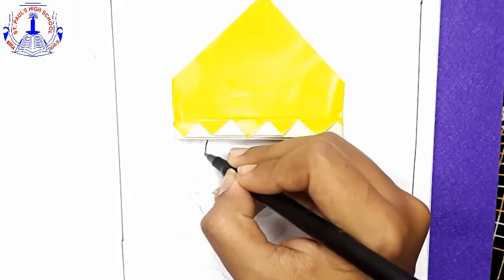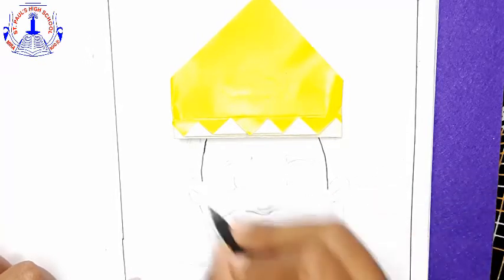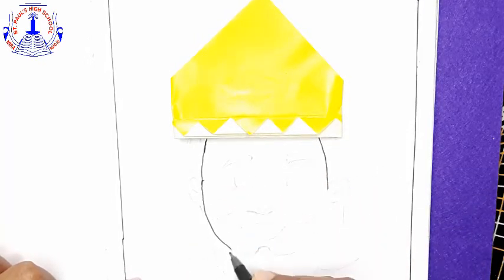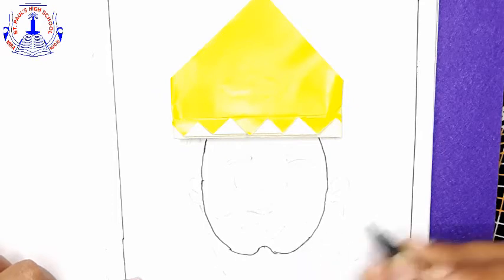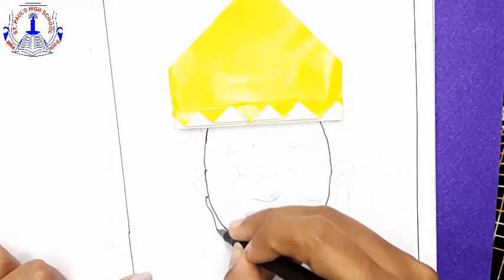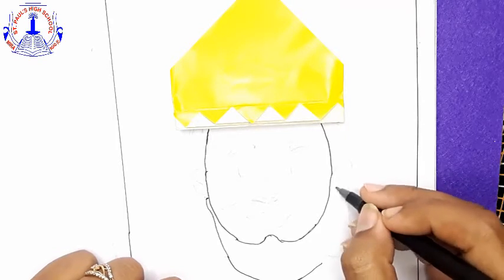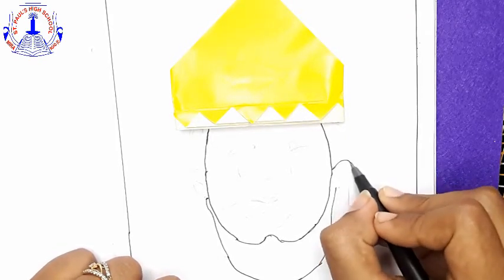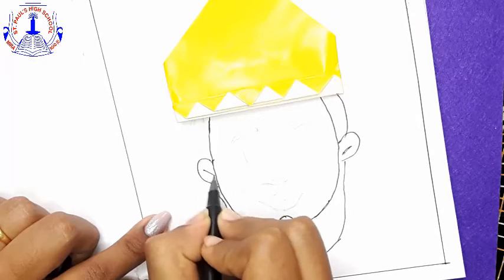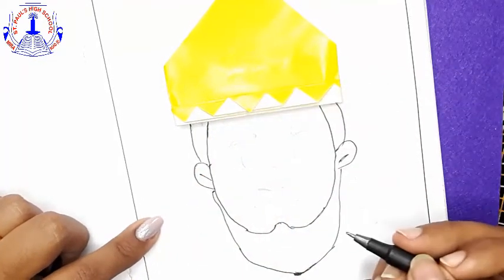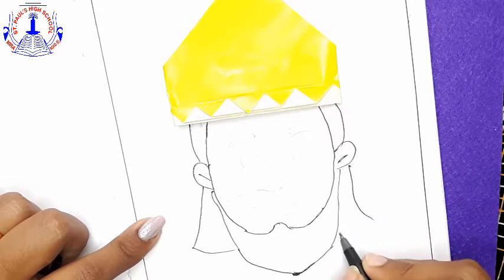Then draw the hairs and the ears and the bearded ear. So make the borderline for the face. So see, if you don't have a black sketch pen, you can just use the colors that you all have. Draw the borderline. Okay? So see, this is the next step.